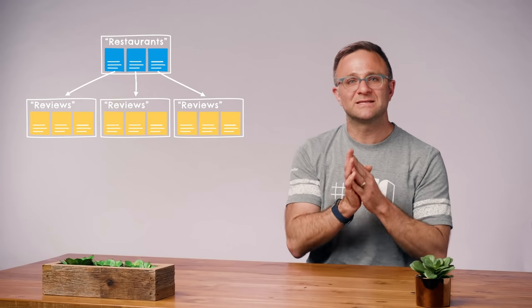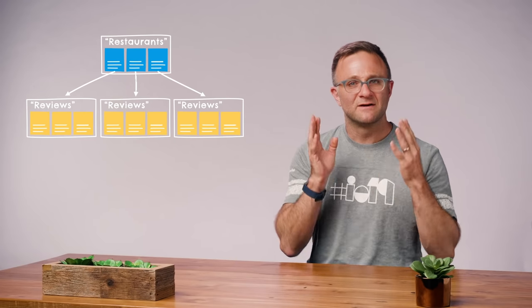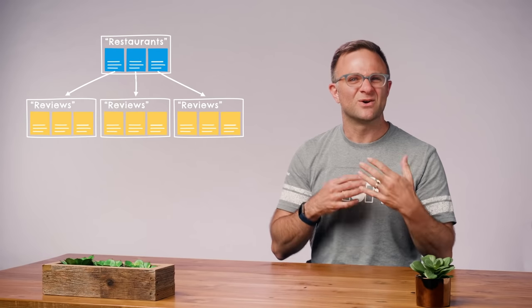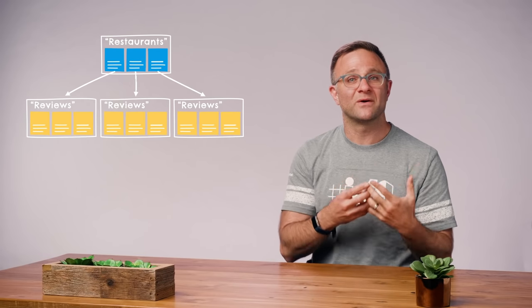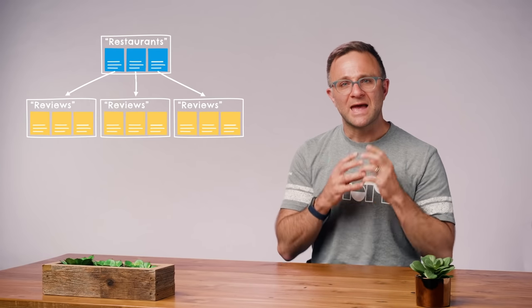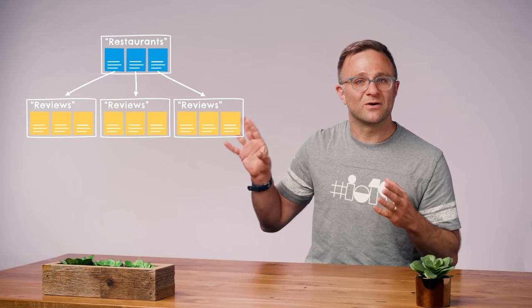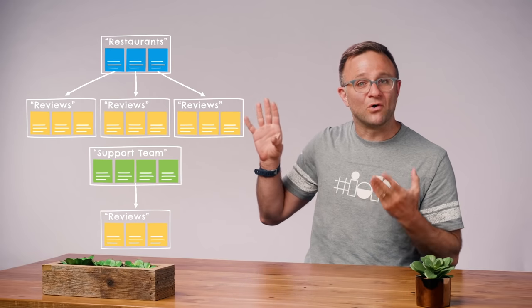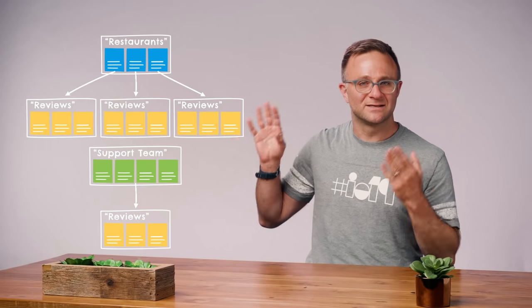There are two important notes about these types of queries. First, at the time of this recording, you're limited to about 200 of these, so only add them for queries you know you're going to use. Second, these queries look for all collections of the same name regardless of where they appear in the database. So if you had a completely unrelated collection elsewhere in your app also called reviews, those would be included in this index. Be careful about how you name your collections.